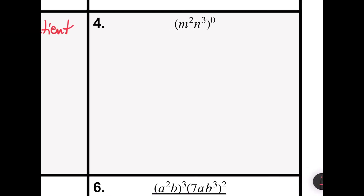Problem number four says m squared n cubed, all raised to the 0 power. Since this is raised to the 0 power, we're going to use that rule. That rule says that any non-zero number raised to the 0 power equals 1. Since everything in the parentheses is being raised to the 0 power, my answer would simply be 1.